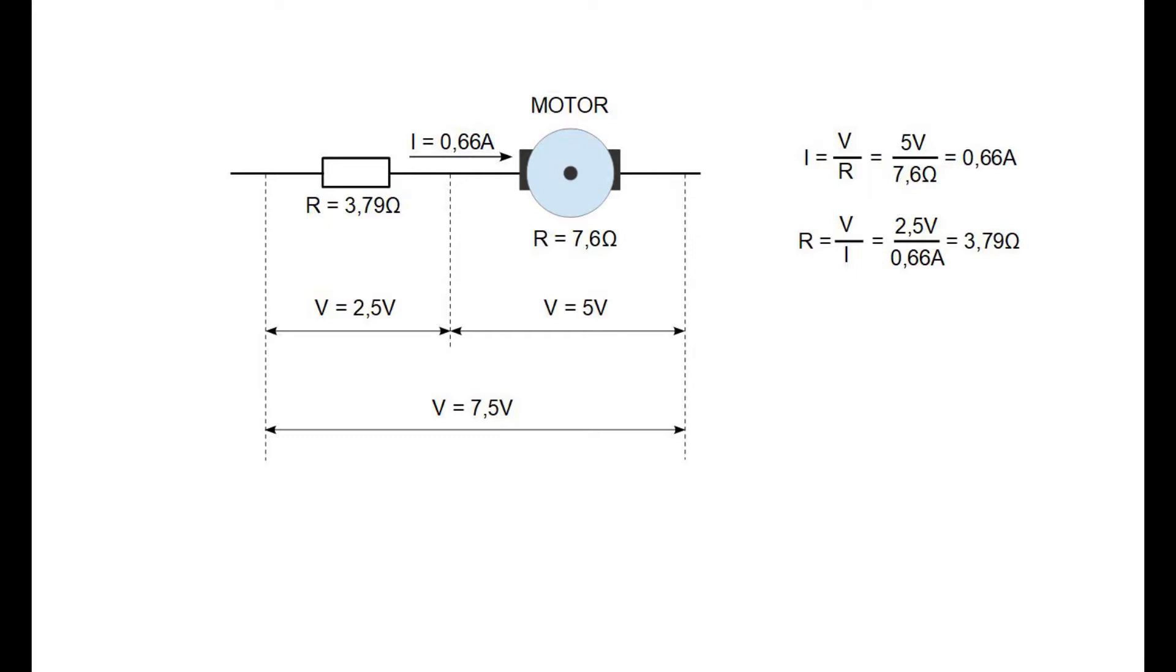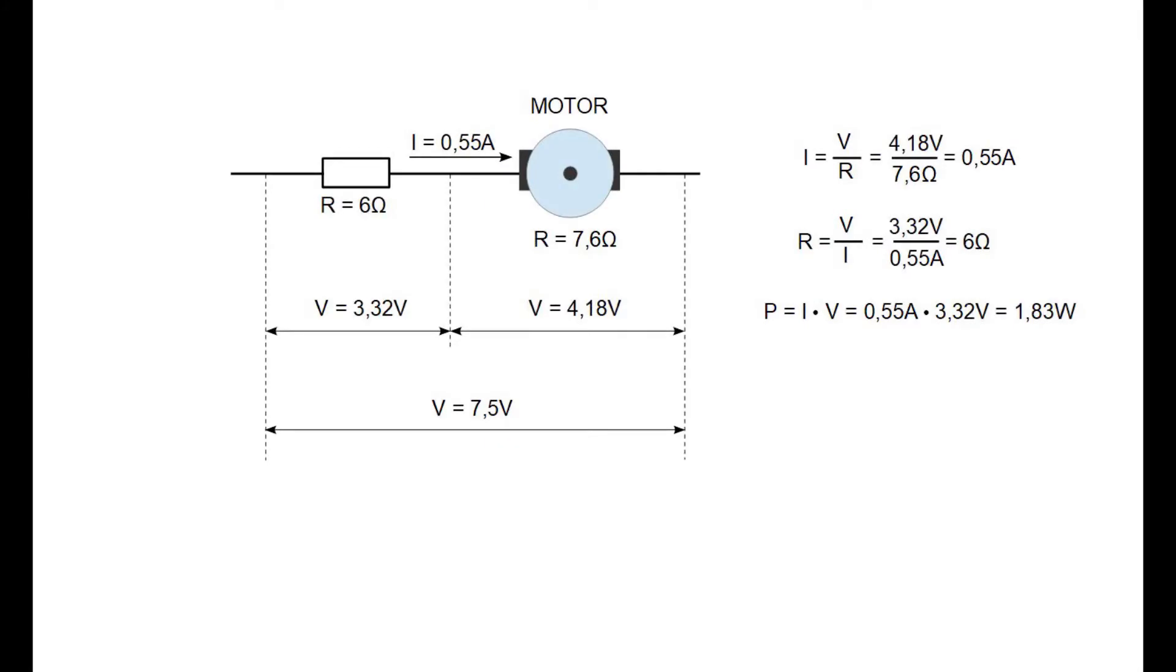There's one more thing that we have to be aware of. We have to calculate the power that our resistor will have to endure. That we can calculate by multiplying the current that will flow through the resistor by the voltage drop on it. So in our case we will need a resistor that has power rating of approximately 1.65 watts or higher. You can also use slightly different resistance as long as the current is strong enough to turn the motor and the resistor power rating is high enough. For example in my case I used 6 ohm resistor simply because I did not have a 3.79 ohm resistor but still it works just fine.